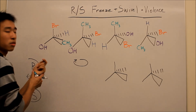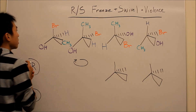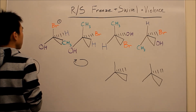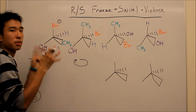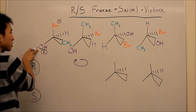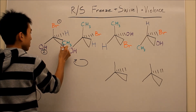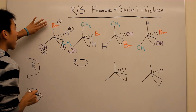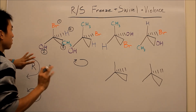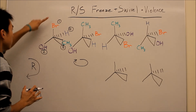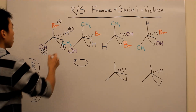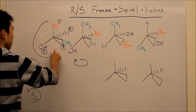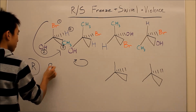Rule number one: first thing you do is rank your groups. Bromine is the highest — it's the biggest atom here. Then comes the oxygen. Then it's the carbon in the CH3. And last is the hydrogen. So bromine is actually the highest, even though it's labeled 1 — don't get confused with that. Going 1, 2, 3, 4, that is counterclockwise, so it is S. Nice and easy.